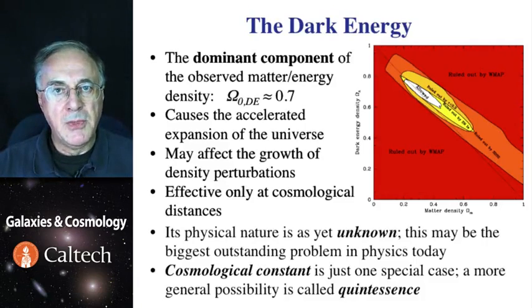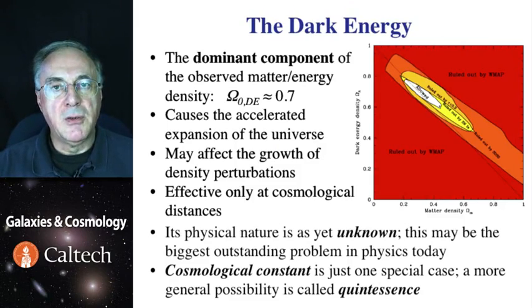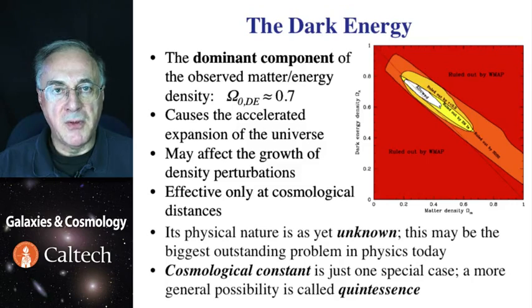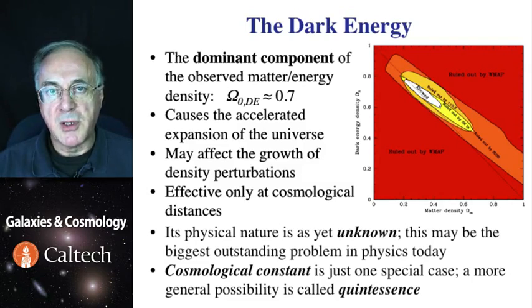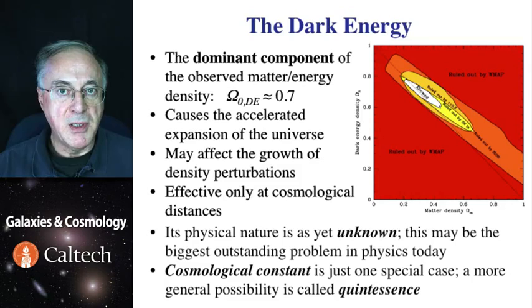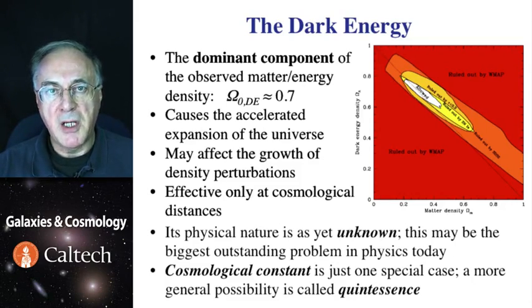Just to remind you, various cosmological tests imply that about 70% of the critical density of the universe is made out of this mysterious component. Its effects are to accelerate the expansion of the universe. This affects the age of the universe and therefore may also affect the growth of density perturbations that give rise to the large-scale structure. It is an effect that's only apparent at large cosmological distances, which explains why it hasn't been seen earlier. And it's certainly an outstanding puzzle, and not for the lack of trying.